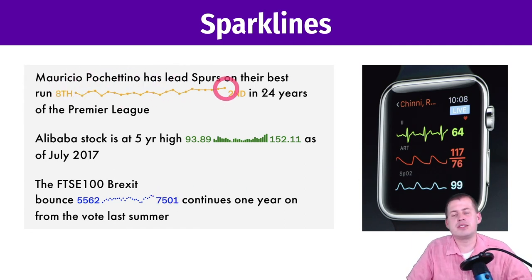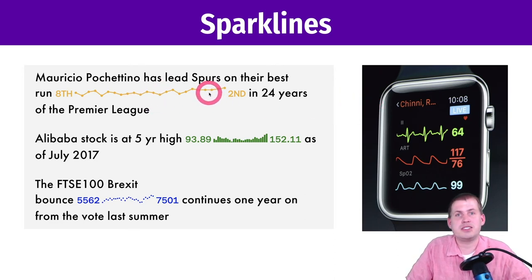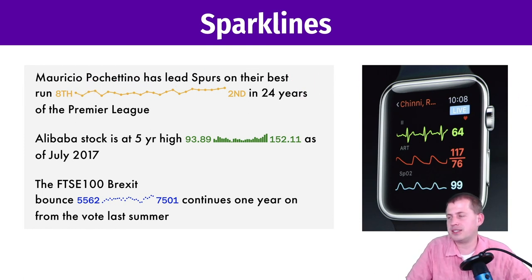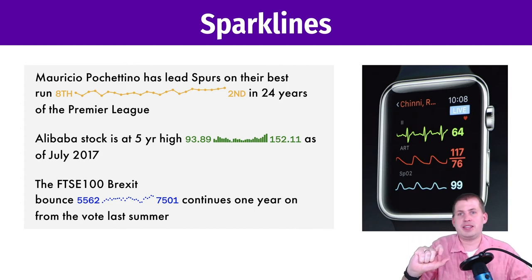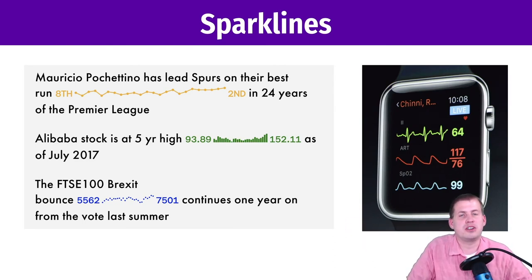There is a free font you can download — linked in today's course material — that you can use with HTML and CSS to encode actual graphics within web-based text. You can also use it in Word with tricky font settings, or in InDesign and Illustrator. To do this kind of thing in R, the trick is to just make a regular ggplot, save it with ggsave, but make it really tiny — like a height of a tenth of an inch — and place it in your text.